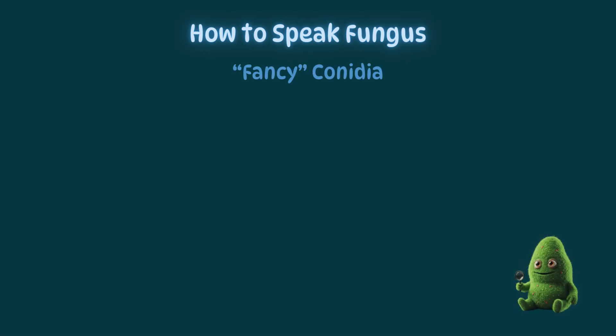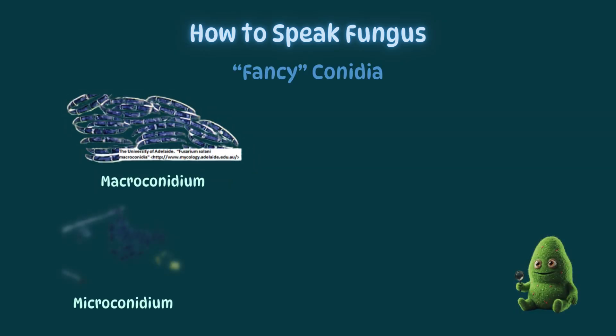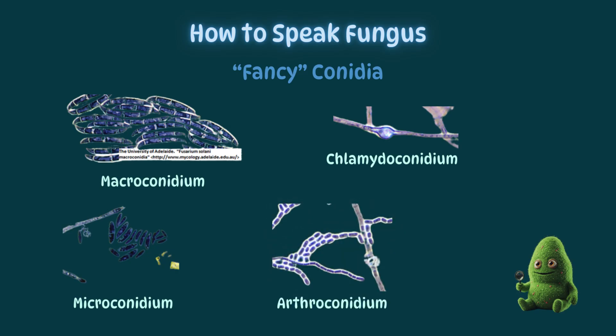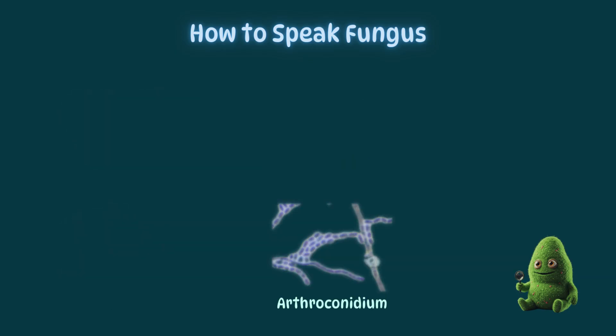Conidia may also come with elaborate nomenclature. Common ones include macroconidia and microconidia, which refers to different-sized conidia in a single organism, chlamydoconidia or false conidia, and arthroconidia, which break down directly from the main hyphae.